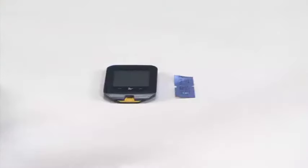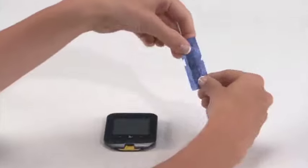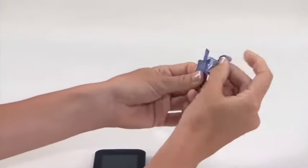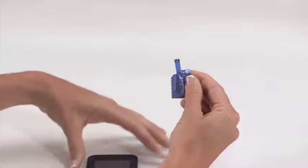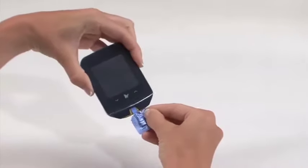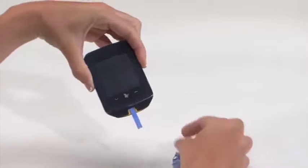Open the test strip foil at the notch and tear down to expose the test strip. Insert the test strip into the meter until it stops. This will turn the meter on.